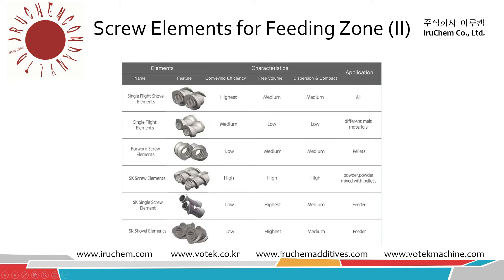Elements with a bigger volume — bigger feeding volume — are used for the feeder usually, to maximize the amount of material that can be conveyed into the extruder.